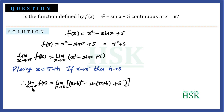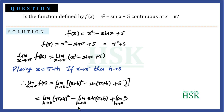So we can write the limit of x tends to π of f(x) as the limit of h tends to 0 of (π + h)² − sin(π + h) + 5. This is split into: limit of h→0 of (π + h)² minus limit of h→0 of sin(π + h) plus limit of h→0 of 5.